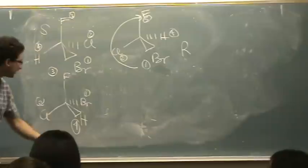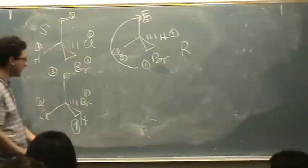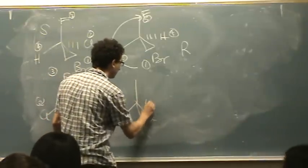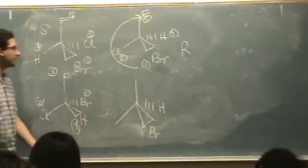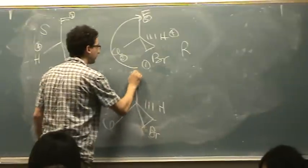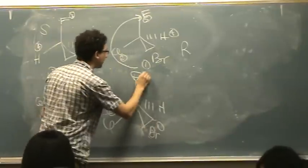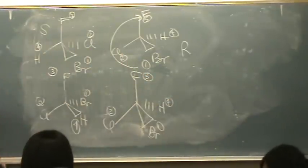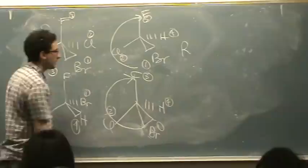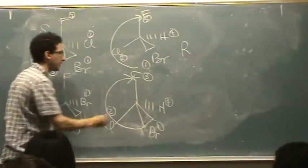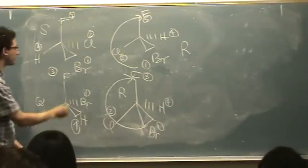For the paper method, switch whatever is priority 4 with whatever is in the back dashed position — so that's 1 and 4 in this case. Redraw your template: switch 1 and 4, so H will be back and bromine in front. Leave chlorine and fluorine where they were. Renumber 1, 2, 3, and 4. Now just connect the dots — 1 to 2 to 3 goes R. Because I switched two groups, I inverted the configuration, so the original must have been S. This agrees with our other methods.